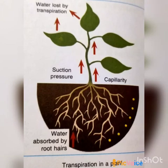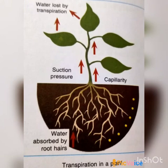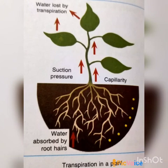Transpiration is also beneficial to plants because it creates a suction pull which helps water to be transported to great heights in tall trees. In tall trees, roots absorb water and minerals and it gets transported to the uppermost leaf, due to the suction pull created by transpiration. Transpiration also helps to lower the plant's body temperature in summers, which is why it is known as a necessary evil.